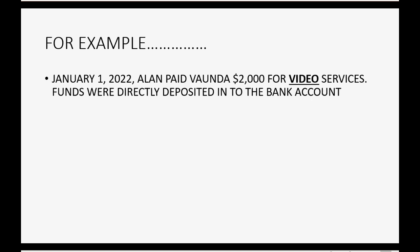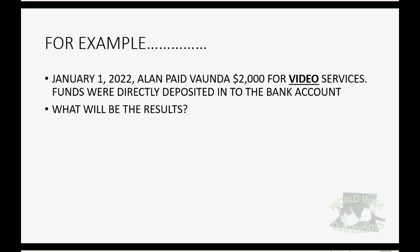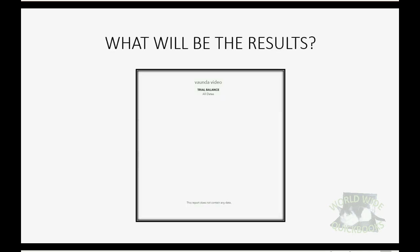The funds were directly deposited into the bank account. So what will be the results after we record this very first deposit? Right now the trial balance is empty, but once you deposit two thousand dollars, cash in Chase Bank will show up in the trial balance for the very first time in the amount of two thousand dollars, and video income will also show up in the amount of two thousand dollars.